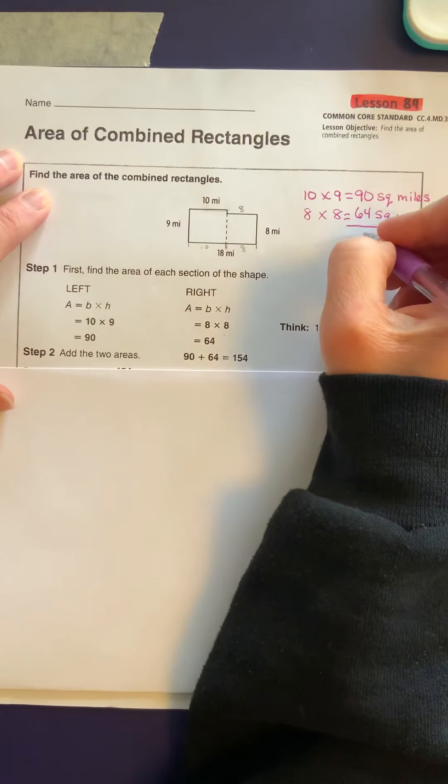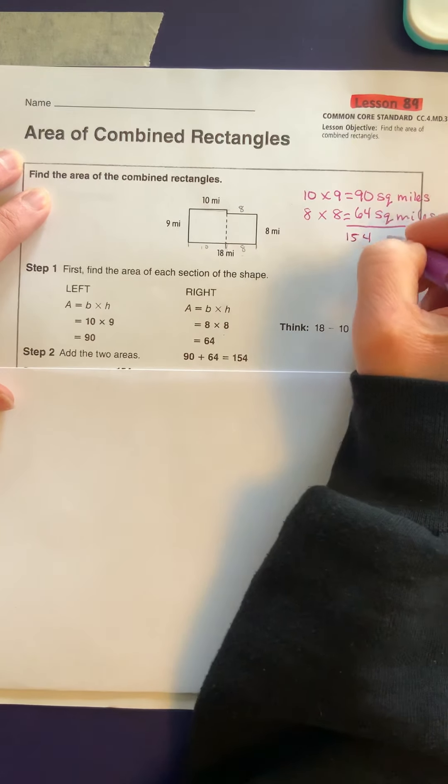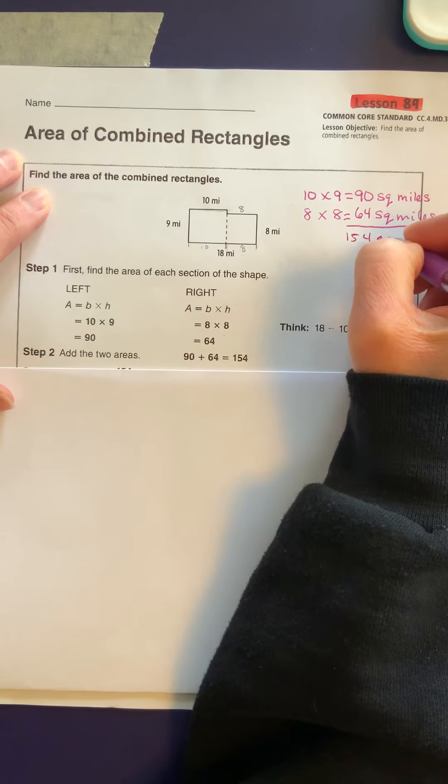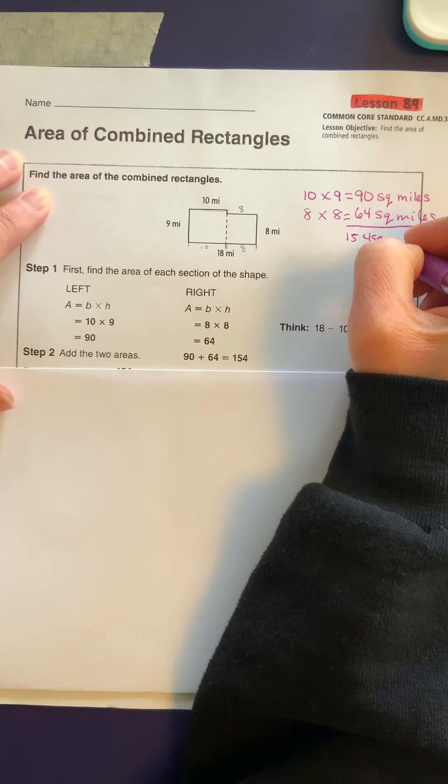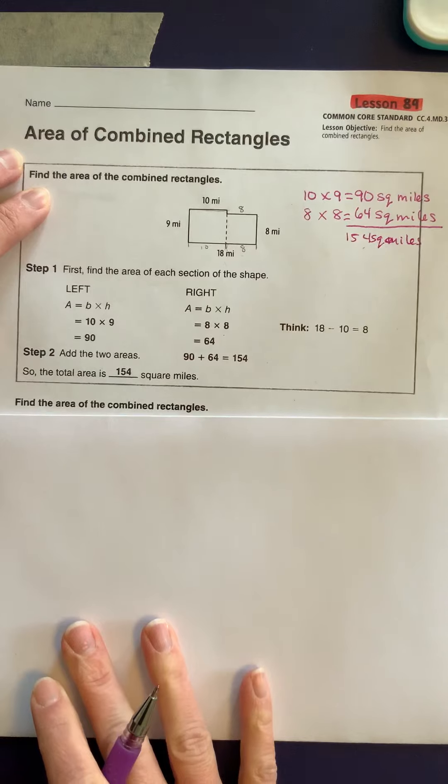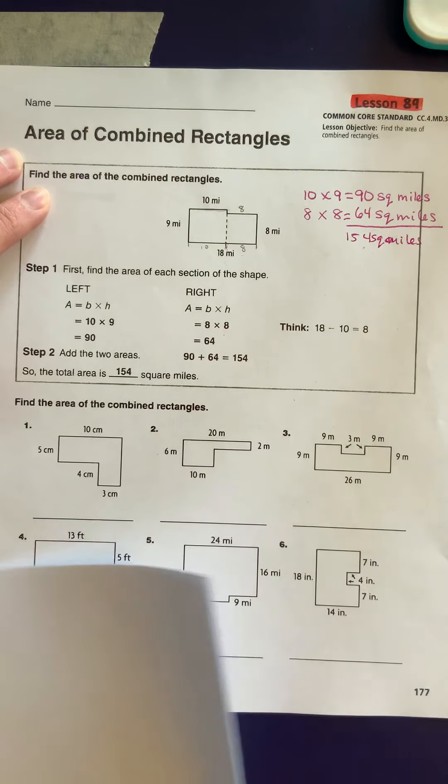We're going to add the two square areas. So we have 154 square miles. So now we're going to continue to do that here.